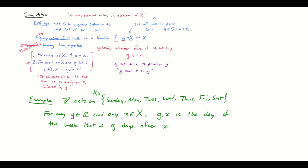Our group operation for ℤ is addition, so that'll look a little different. For example: 3·Monday is the day three days after Monday — Tuesday, Wednesday, Thursday. And 7·Friday is the day seven days after Friday, which is still Friday. And 0·Thursday is the day zero days after Thursday — that's just Thursday.